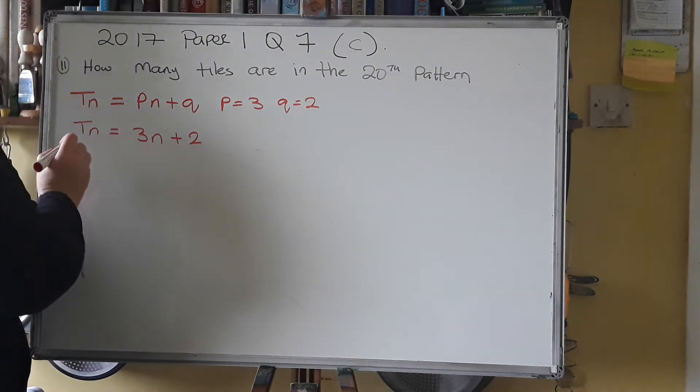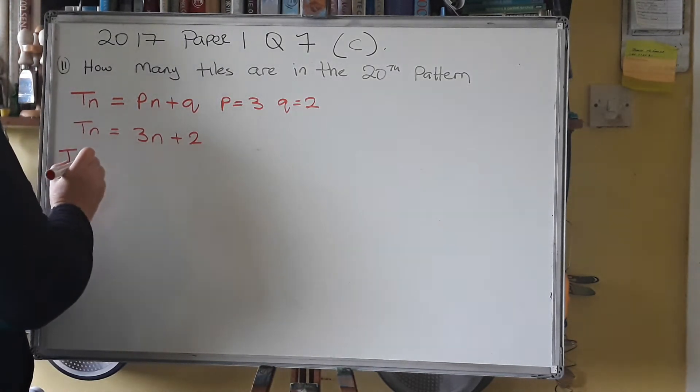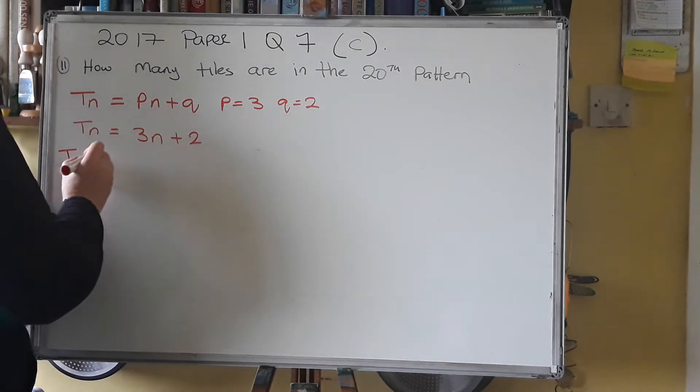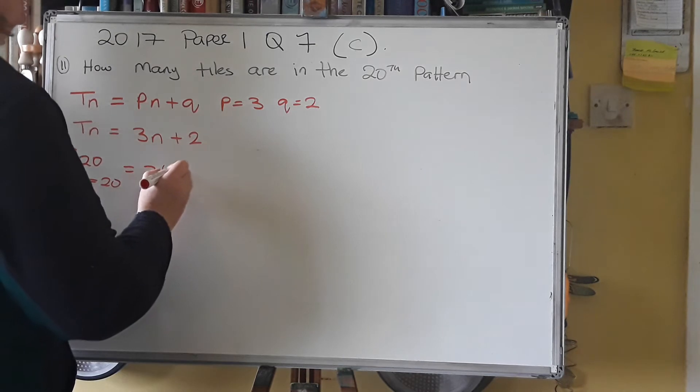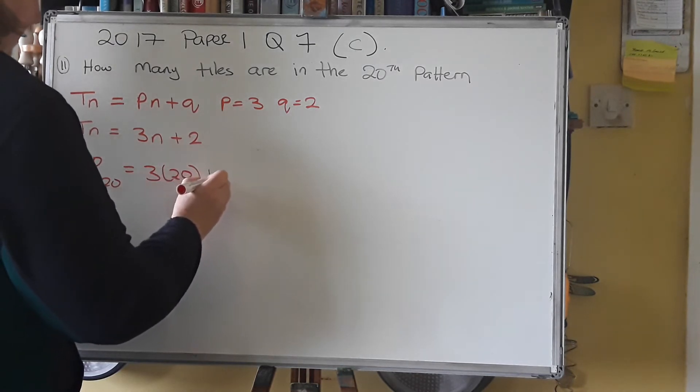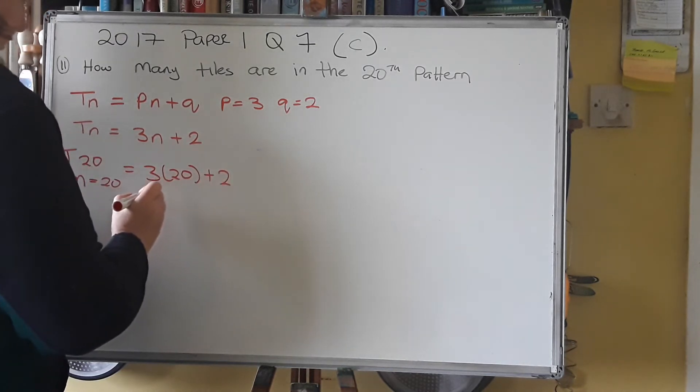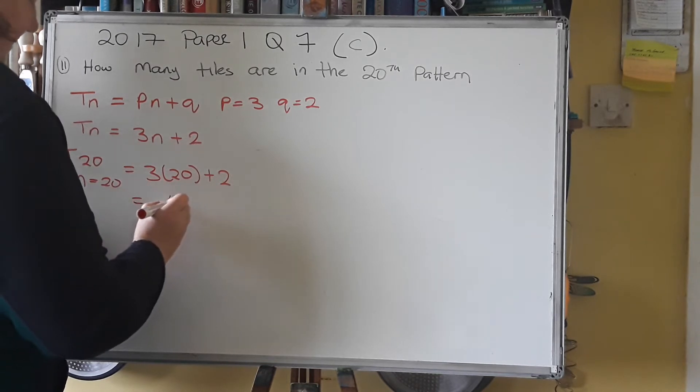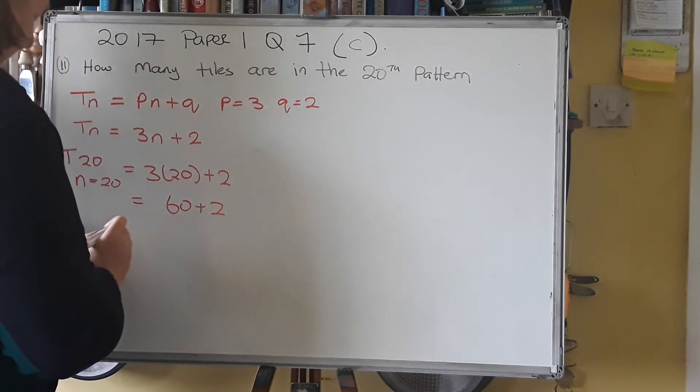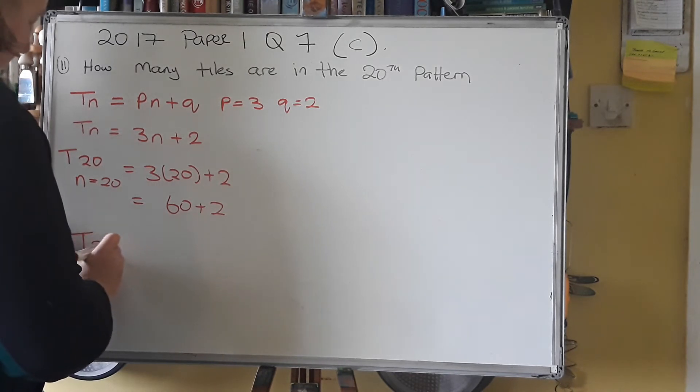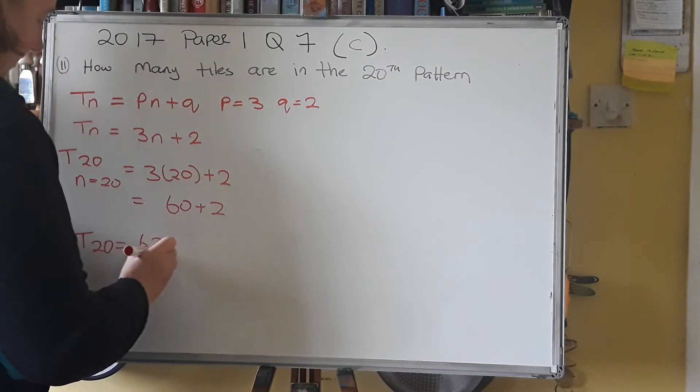Now you're looking for T20, the 20th pattern. So we're going to put in n equal to 20. So now we have 3 times 20 plus 2. 3 times 20 is 60 plus 2. So in the 20th pattern, there are 62 tiles.